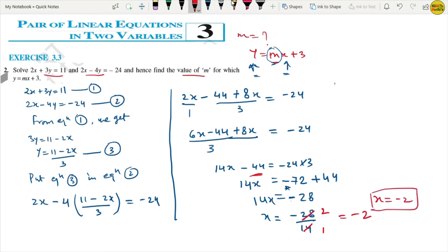Now what will we do? We put x equals to minus 2 in equation 3. Then we will get y value. Let's put it. Y equals to 11 minus 2 into minus 2 upon 3. So what will it be? 11 minus minus plus, and this is 4.